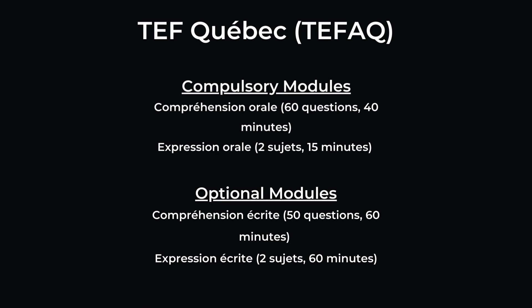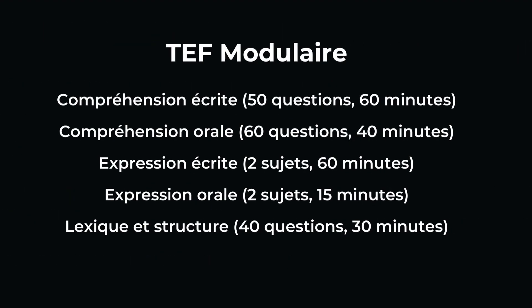TEF Quebec has two modules. The compulsory module includes Compréhension Orale with 60 questions in 40 minutes and Expression Orale with two topics in 15 minutes. The optional module includes Compréhension Écrite with 50 questions in 60 minutes and Expression Écrite with two topics in 60 minutes. TEF Modulaire has Compréhension Écrite with 50 questions in 60 minutes, Compréhension Orale with 60 questions in 40 minutes, Expression Écrite with two topics in 60 minutes, Expression Orale with two topics in 15 minutes, and Lexique et Structure with 40 questions in 30 minutes.